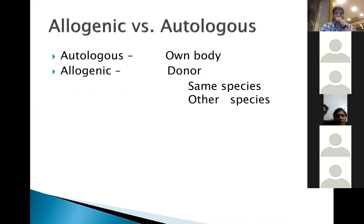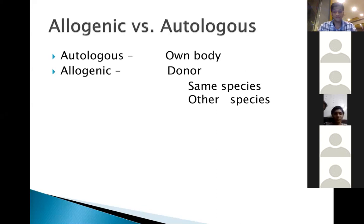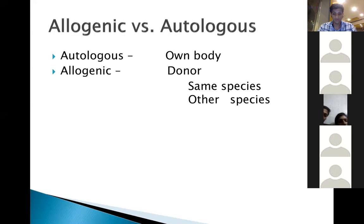Stem cells can be allogenic or autologous. Allogenic means when you take someone else's stem cells — there's a donor and a recipient — the donor stem cells are matched and given to the patient. Autologous means from one's own body, so someone's bone marrow is taken, processed, and then given back to the same person. The advantage here is that there's no need to cross-match.